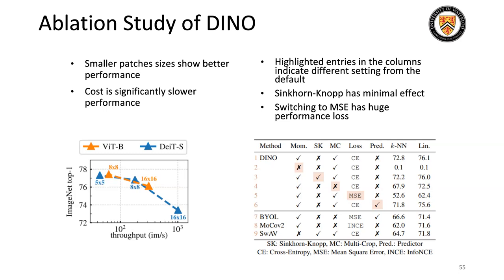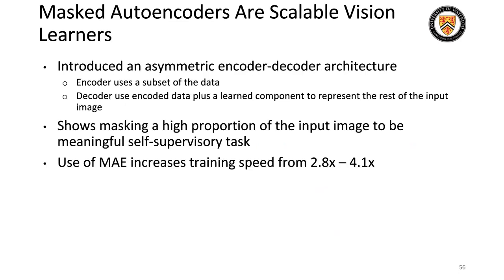Next is Masked Autoencoders, or scalable vision learners. This paper introduces an asymmetric encoder-decoder architecture where the encoder uses a subset of the data and the decoder uses encoded data plus a learned component to represent the rest. It shows that masking a high proportion of the input image makes for a meaningful self-supervised task, with training speeds increasing 2.8 to 4.1 times depending on model parameters.